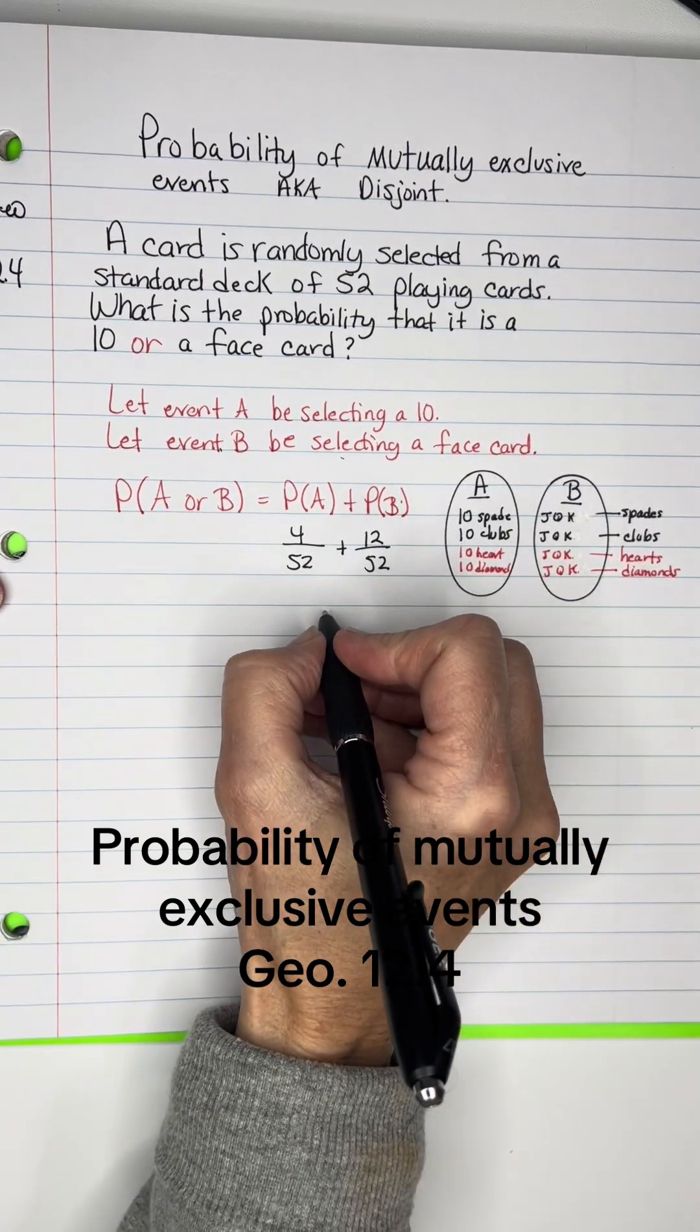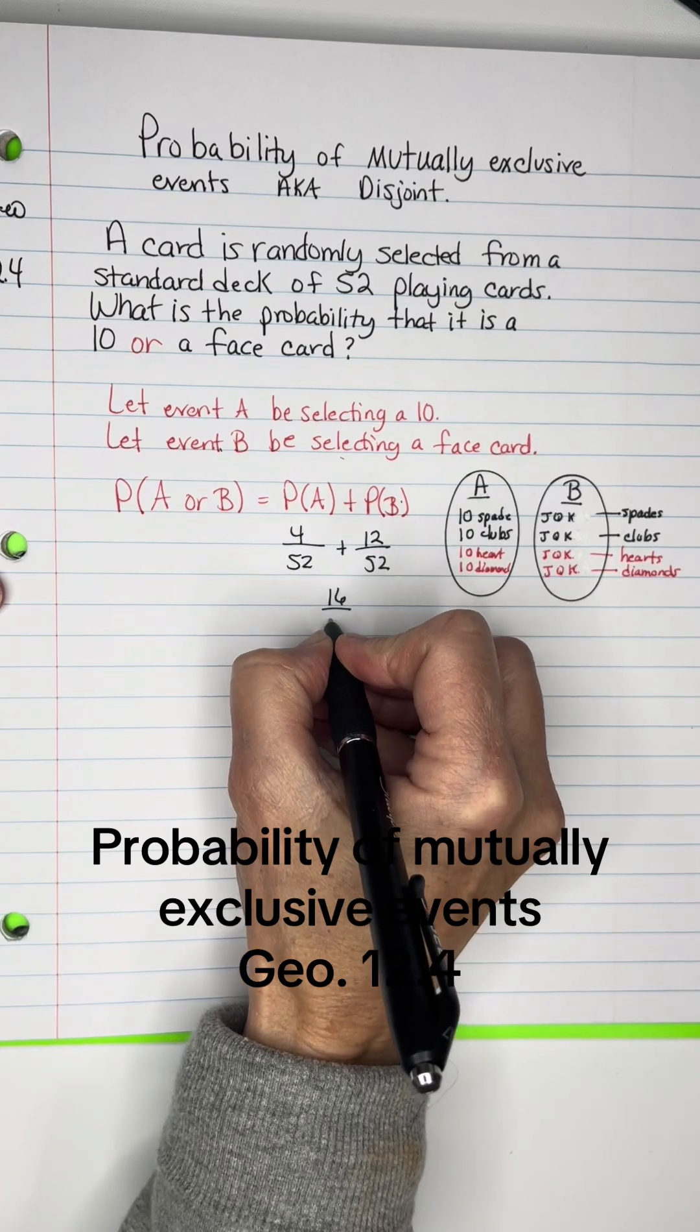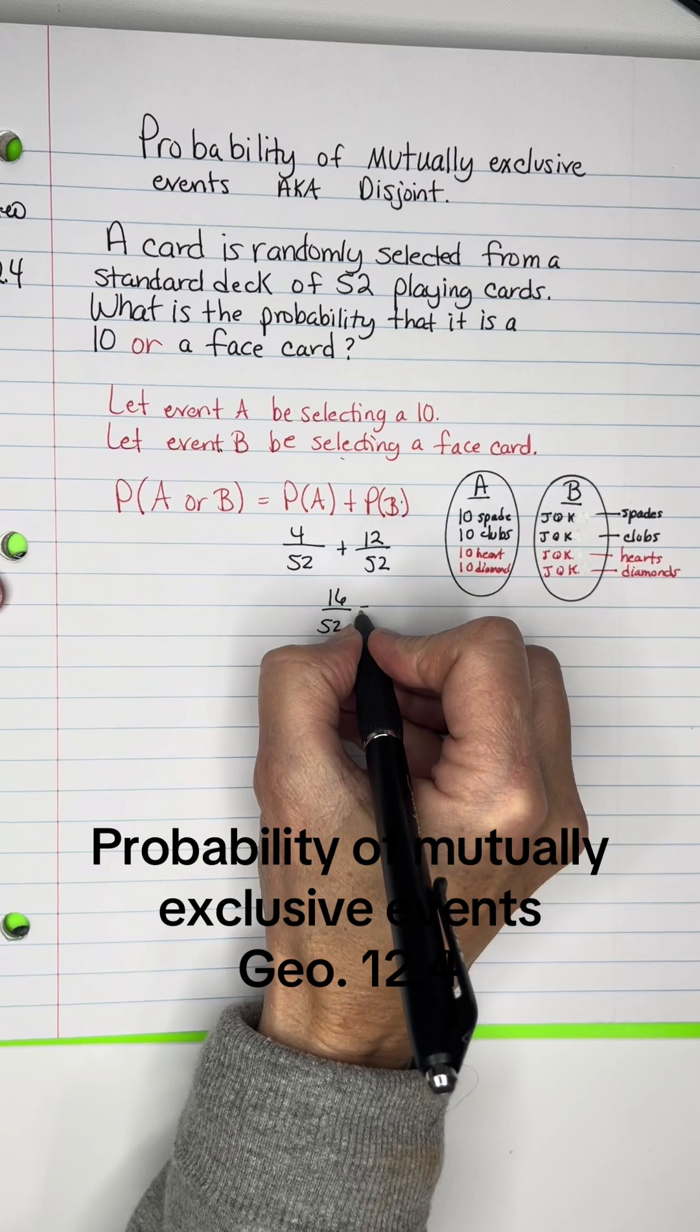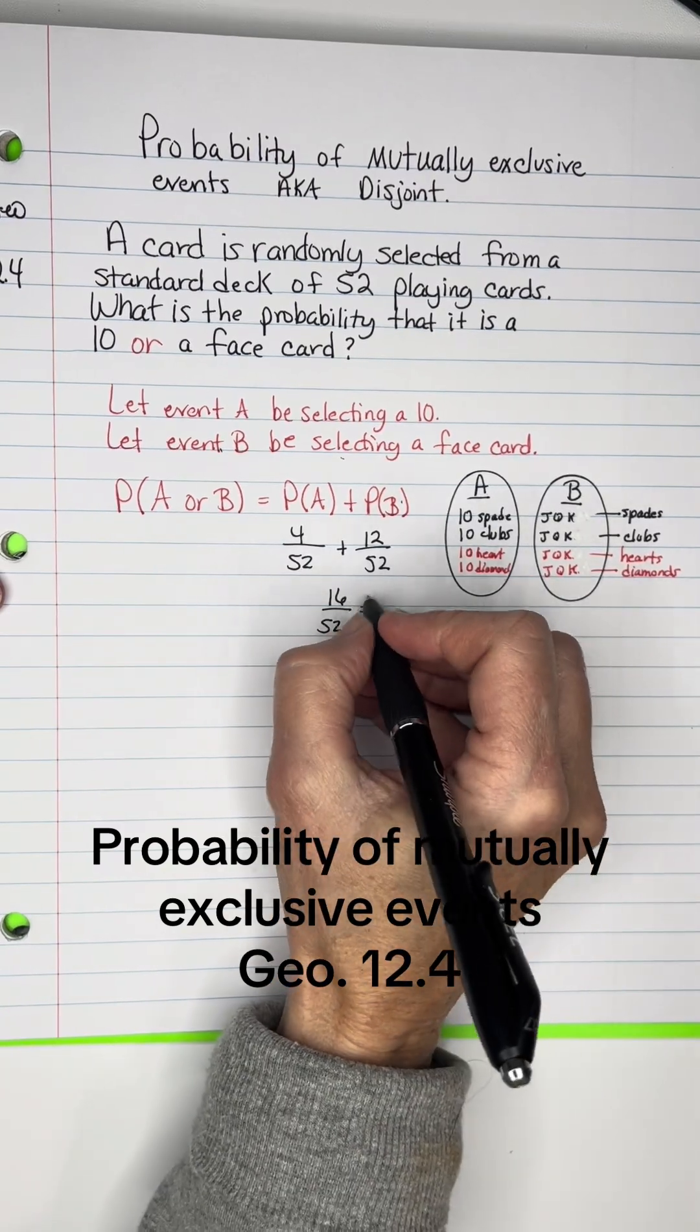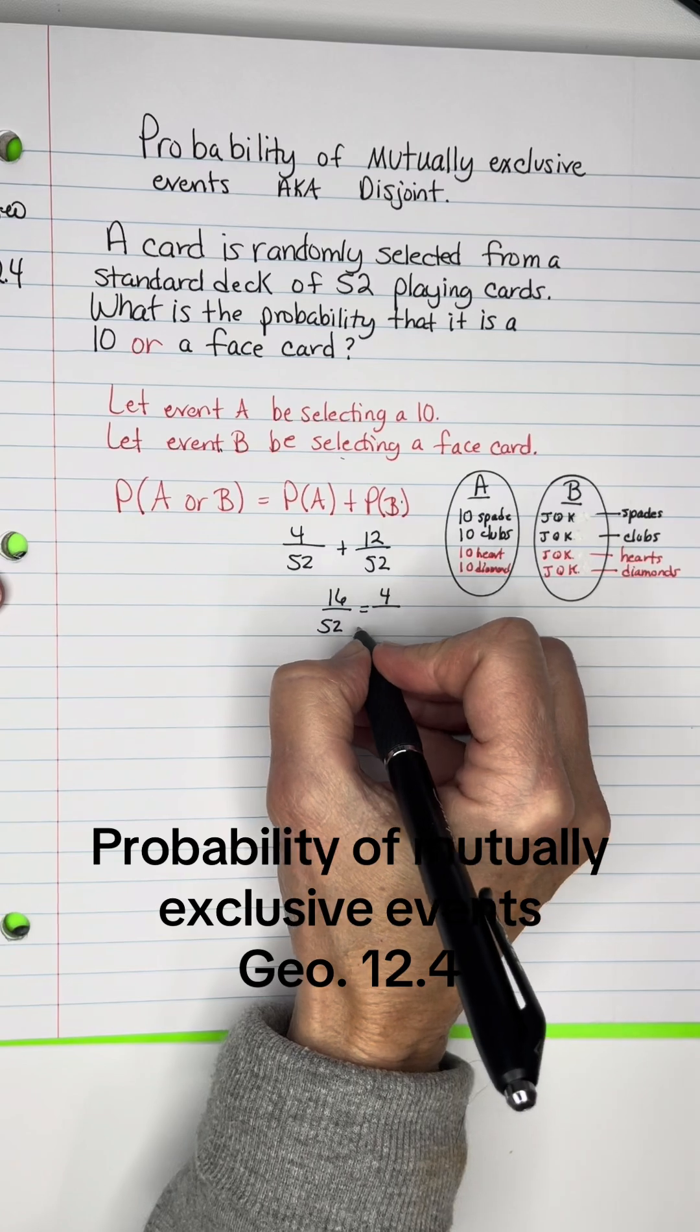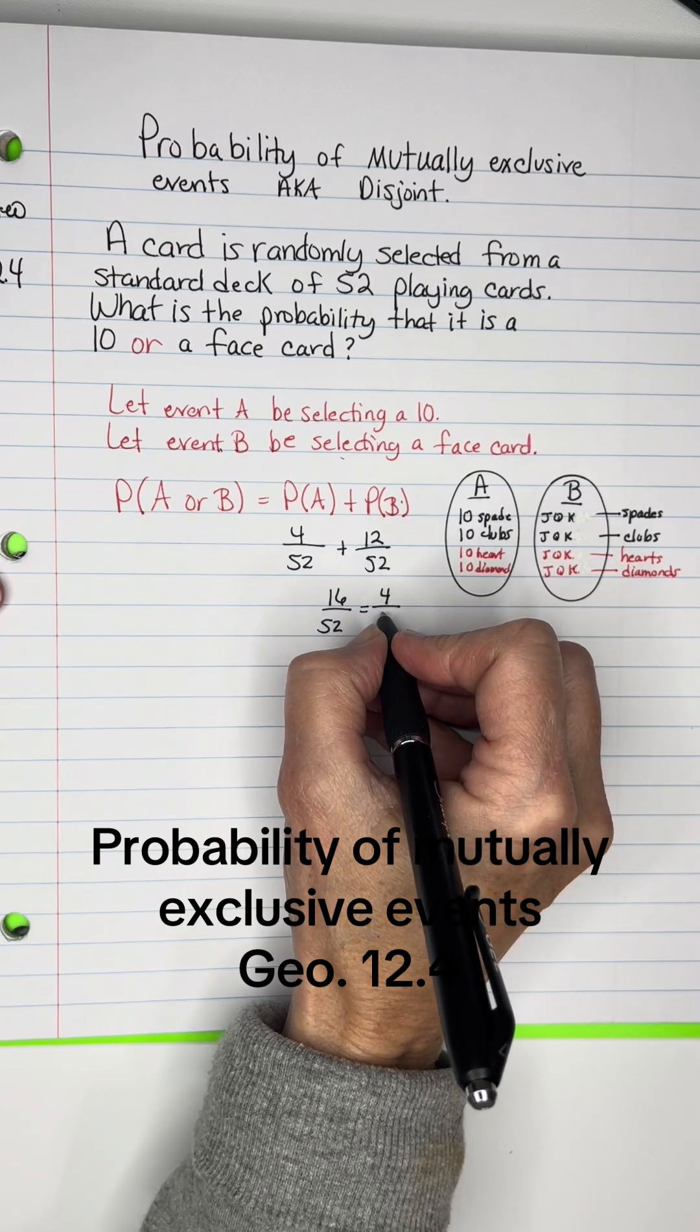Since I have a common denominator, I'm ending up with 16 over 52. And I believe I can divide those both by 4. 16 divided by 4 is 4, and 52 divided by 4 is 13.